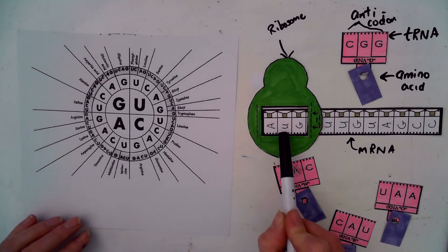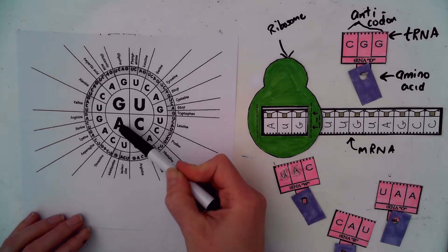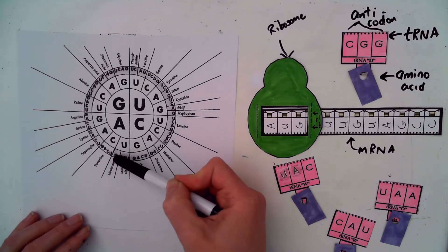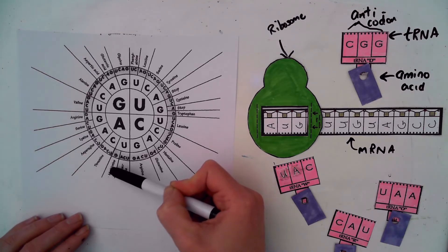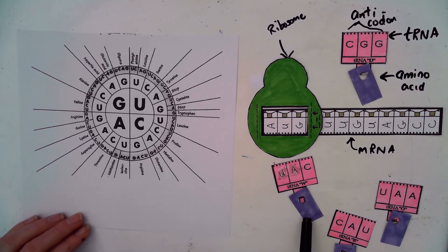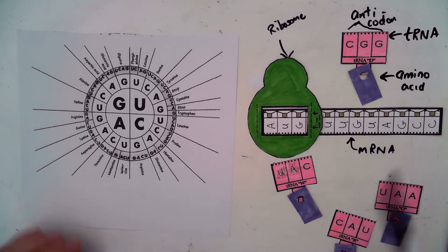So in this case because it's AUG, AUG. That means we are going to be attaching methionine. That is the first amino acid that is going to be attached in this amino acid sequence that we are going to be creating.